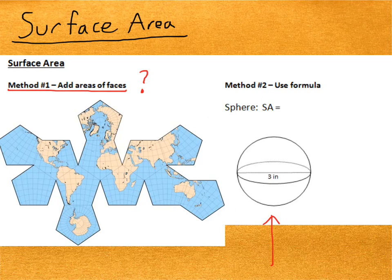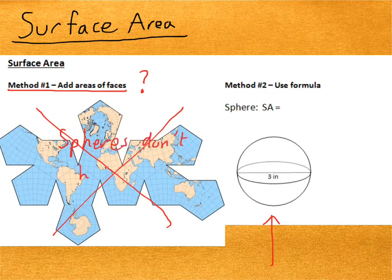But even then, we're not getting a perfectly accurate representation of the sphere. Because the sphere is completely round. And you can't really get a round shape out of flat ones. So, that method just doesn't work. Because spheres don't have faces.